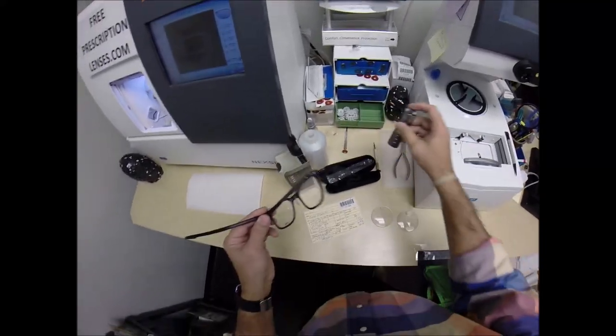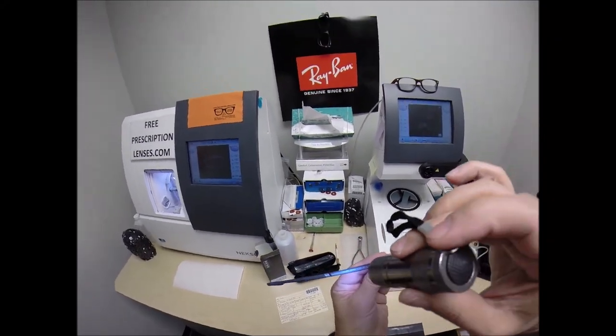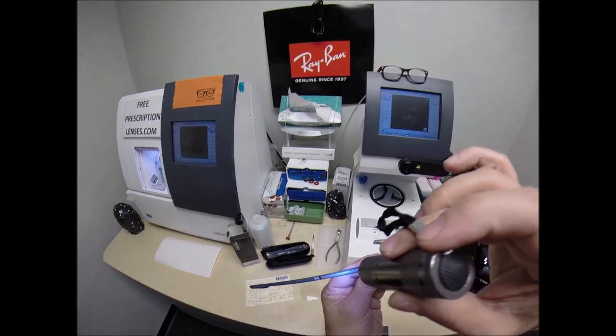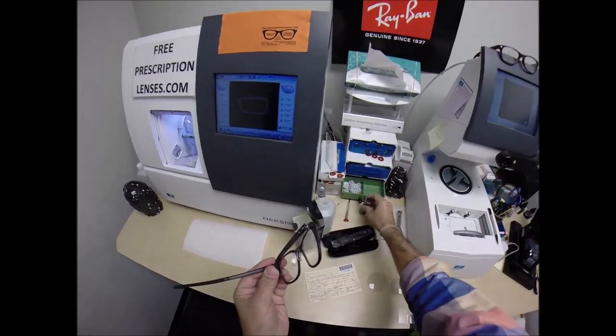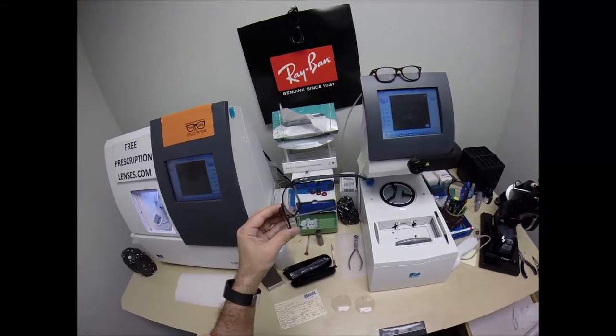And again, this is the Oakley 8093, the Milestone. And the color matte black ink in the 49 eye size. It comes in several colors, but only one size. So let me go ahead and begin.